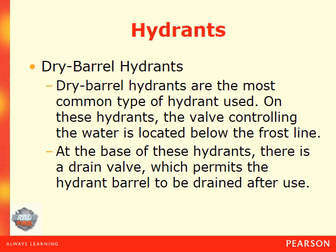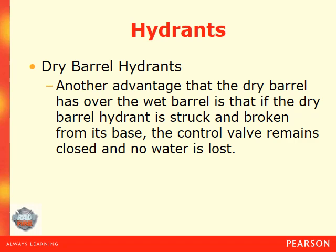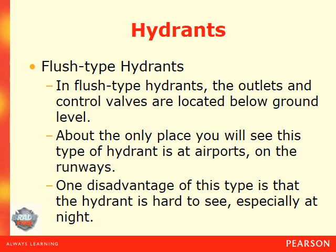In a dry barrel hydrant, the valve controlling the water is located below the frost line. At the base of these hydrants there is a drain valve which permits the hydrant barrel to be drained after use. Essentially, there is a valve below the ground; when you turn the hydrant at the top it causes that valve to open, allowing water to come up out of the feeder lines into the hydrant. After use, you close the hydrant and the water is allowed to leak out through the drain valve. Another advantage of the dry barrel hydrant is that its control valve remains closed and no water is lost if the hydrant is broken and knocked off its base.